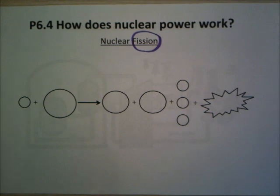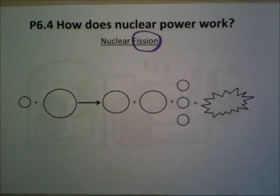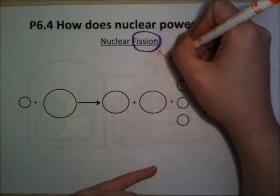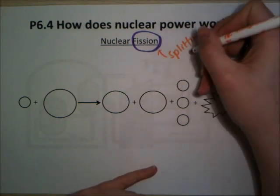You squeeze them together and you make them into a bigger one. After a certain size of nucleus — around about iron — what you need to do to get energy out is not put two together and make an even larger one; you start to split the atoms up. That's how nuclear fission works. Fission, unlike fusion, is splitting atoms, and it releases energy.